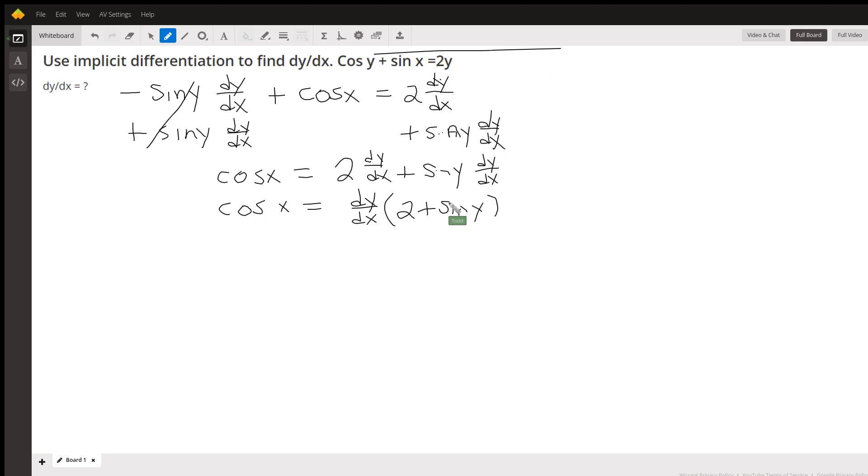I'm almost done. All I want to do is get dy dx alone. To get dy dx alone, it's multiplied to 2 plus sine of y. So I'm going to divide each side by 2 plus sine of y. I'm left with cosine of x over 2 plus sine of y.